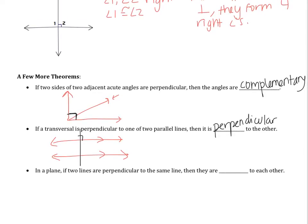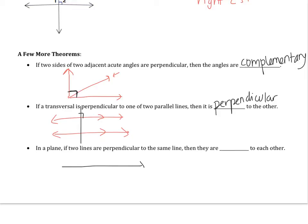And lastly, in a plane, if two lines are perpendicular to the same line, then they are blank to each other. Let's have two lines that are both perpendicular to the same line — then they are what to each other? In the way I've drawn the figure, my two angles are corresponding angles and they're congruent. If corresponding angles are congruent, that means our lines are parallel. So two lines perpendicular to the same line means your original lines have to be parallel. I'm not asking you to memorize these theorems, but I am asking you to recognize them in a figure and be able to use them.